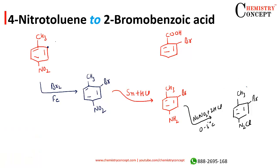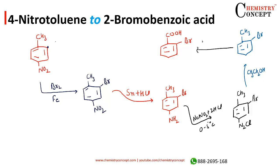From here, we react with ethanol (CH3CH2OH), or we can also do the reaction with phosphoric acid. When we do this, the N2Cl is replaced by hydrogen. Now comes the final step: treat this compound with KMnO4. When we do this, the entire methyl group converts into carboxylic acid. That's it — done.